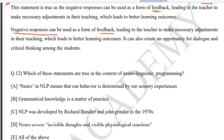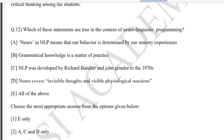Question 12: which of these statements are true in the context of Neurolinguistic Programming, also called NLP? The options are: (A) neuro in NLP means our behavior is determined by our sensory experiences; (B) grammatical knowledge is a matter of practice; (C) NLP was developed by Richard Bandler and John Grinder in the 1970s; (D) neuro covers invisible thoughts and visible physiological reactions; or (E) all of the above.